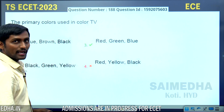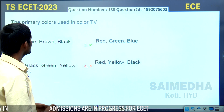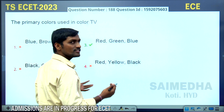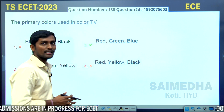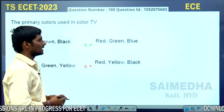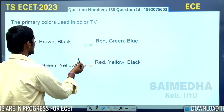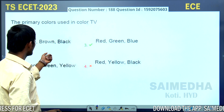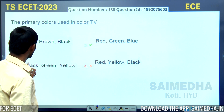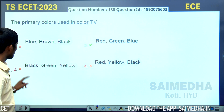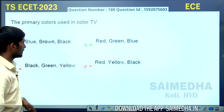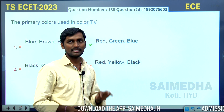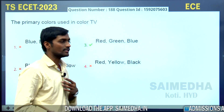The primary colors used in color TV are RGB — Red, Green, and Blue. These are the primary colors used in television.